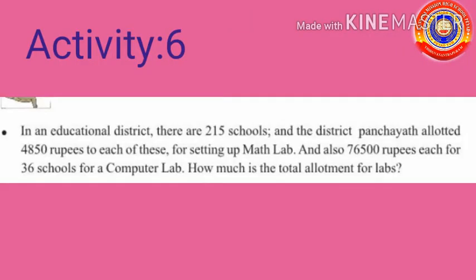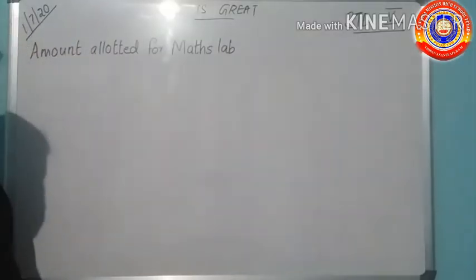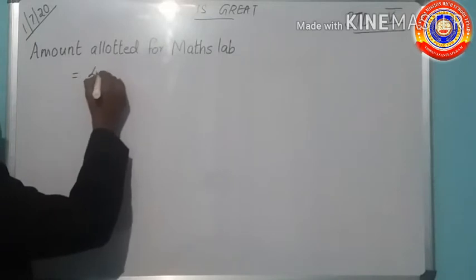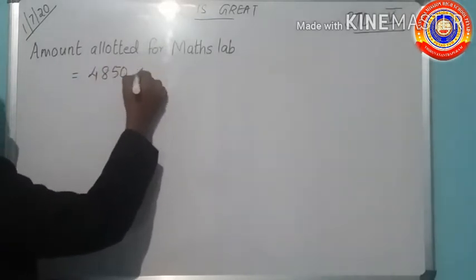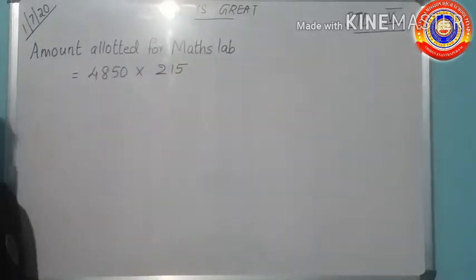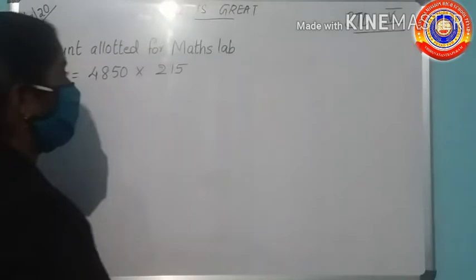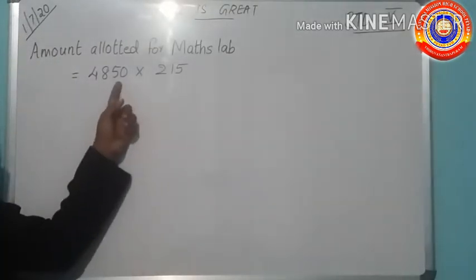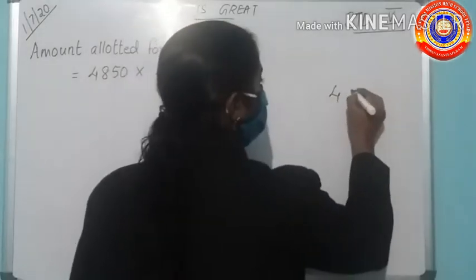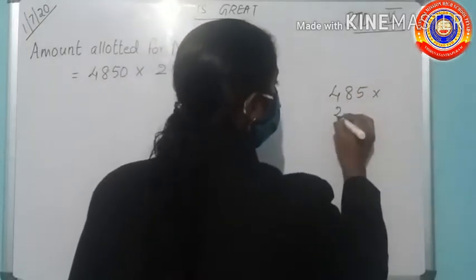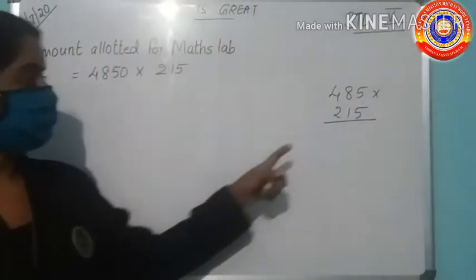Activity number 6. In an educational district, there are 215 schools and the district panchayat allowed 4,850 rupees to each of these for setting up math lab. And also 76,500 rupees each for 36 schools for a computer lab. How much is the total allotment for labs? We have to find the amount allotted for math lab. For one lab it is 4850, then for 215 math labs, 4850 into 215. No need to write 0 for multiplying. We have to remove the 0 and then multiply these numbers, that is 485 into 215.